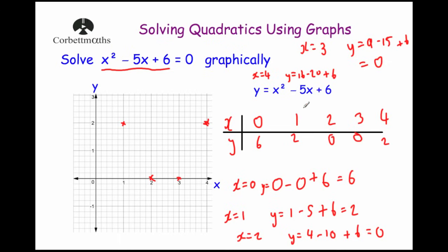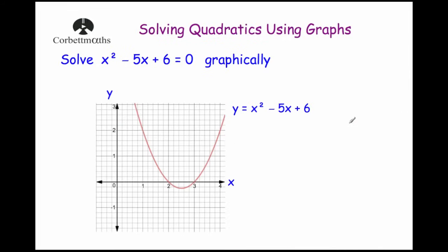I chose this example on purpose because I knew it had integer, whole-number solutions — 2 and 3. Going back to the graph, we're trying to find our solutions where x equals 2 and x equals 3. The great thing about a graph is it shows you every single output for your inputs.